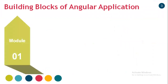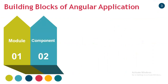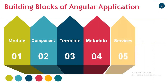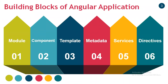What are the building blocks of an Angular application? The very first building block is a module, and the second is a component. A component contains a template, metadata, and services. There are also directives, routers, and pipes, which we will see in upcoming sessions. In this session we are going to cover modules, components, templates, metadata, and services.